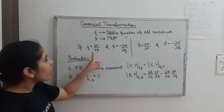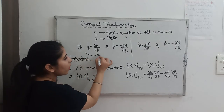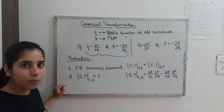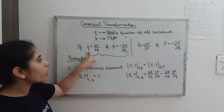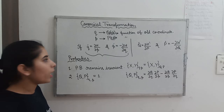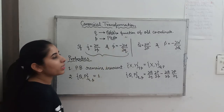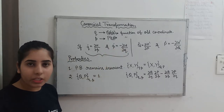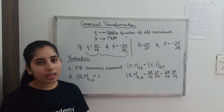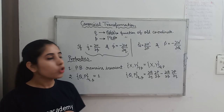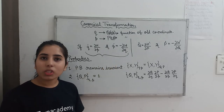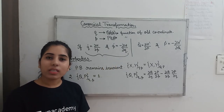We have written Hamilton's equation of motion, where q-dot equals ∂H/∂p, and p-dot equals −∂H/∂q. These are Hamilton's equations of motion. If you don't remember these, please try to memorize them, because these equations will help you in solving numerical problems.